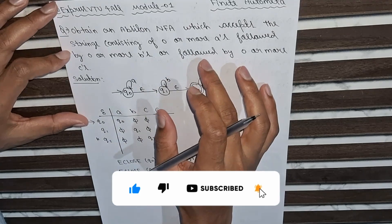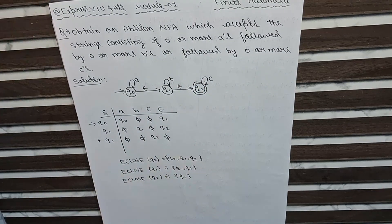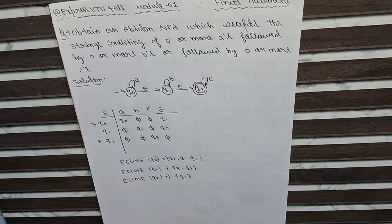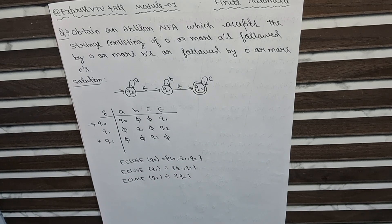Like this, we can find the epsilon NFA diagram for this question, and we can make the transition table and e-closure of all. So thank you for watching our video. Please subscribe, Express Video for All.